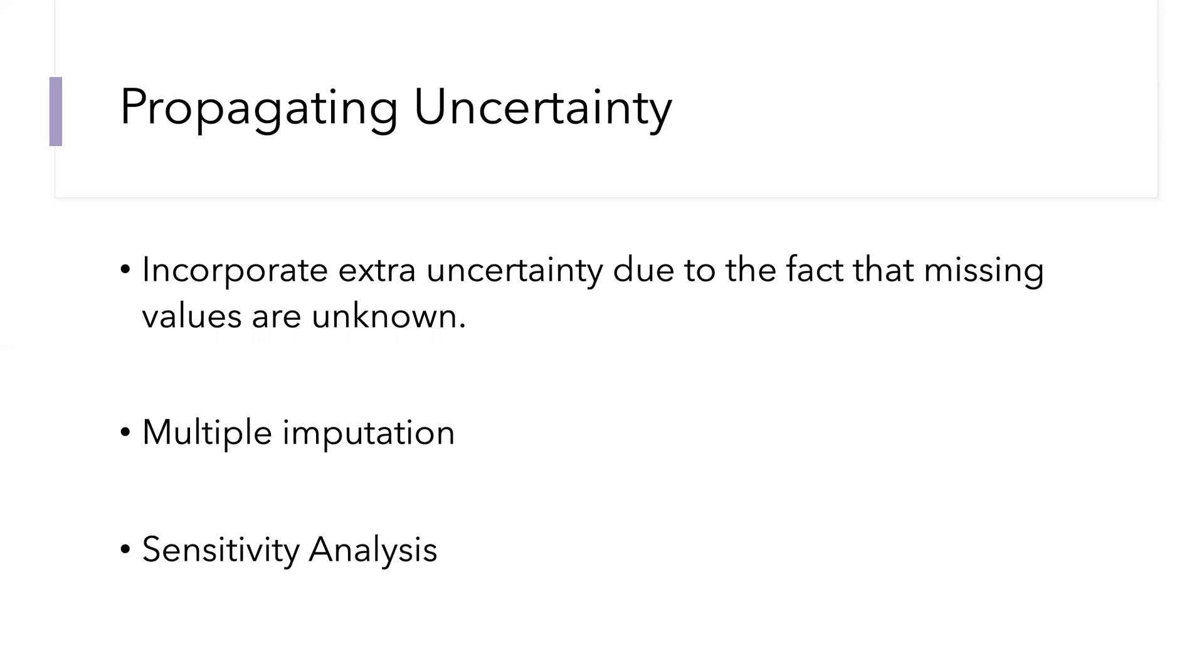That's a high level overview of how to think about the different types of missingness. The next step is to think about how we can take into account what we know about the missingness mechanisms and propagate that uncertainty through to our inference about the parameters that we care about, to our biological insights.